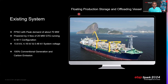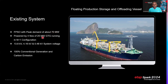FPSO stands for Floating Production Storage and Offloading vessel. From an electrical perspective, this existing system has a peak demand of 70 megawatts. It is powered by four 25-megawatt gas turbine generators running in an N+1 configuration, meaning even if only three of the four generators are running they can still meet the 70-megawatt peak demand.